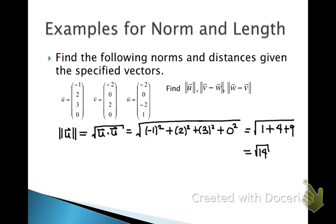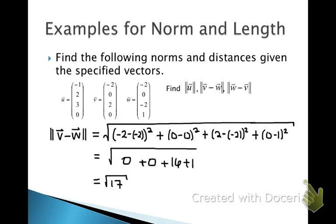Finding the norm is simple. For the norm of vector u, we take the square root of the inner product of u with itself — squaring all the terms in u and adding them together — and the result is the square root of 14. In the second example, to find the distance between vectors v and w, we take the difference in the like terms from v and w, square each difference, add them together, and take the square root. The differences give 0, 0, 16, and 1, yielding an answer of the square root of 17.